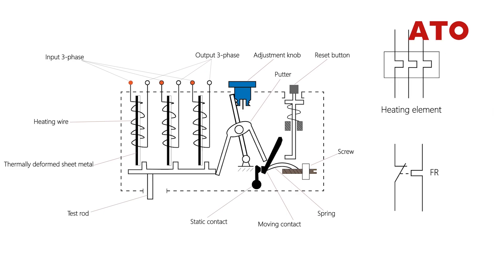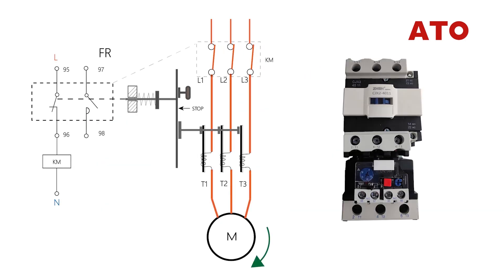To use the relay, you need to connect the heating element in series with the main circuit of the motor, and let the normally closed contacts in tandem connection with the control circuit of the motor.